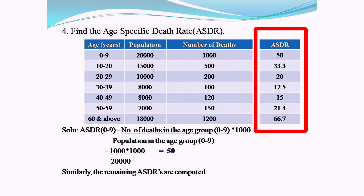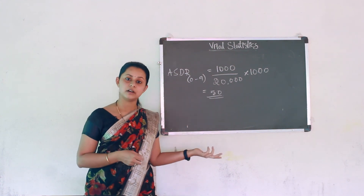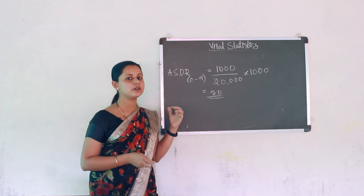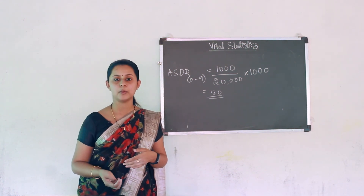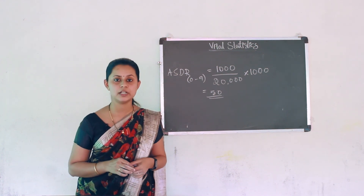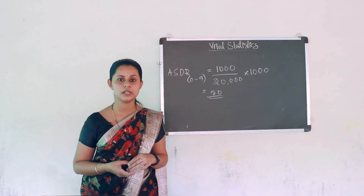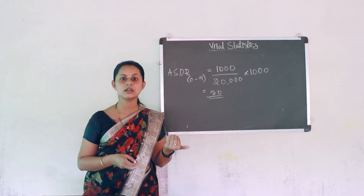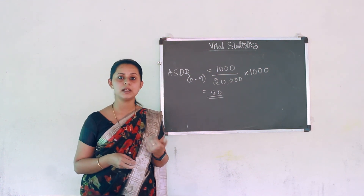This calculation is similar to the age specific fertility rate studied earlier. The difference is that here we consider deaths and average population — both male and female — whereas in age specific fertility rate we consider female live births and female population.